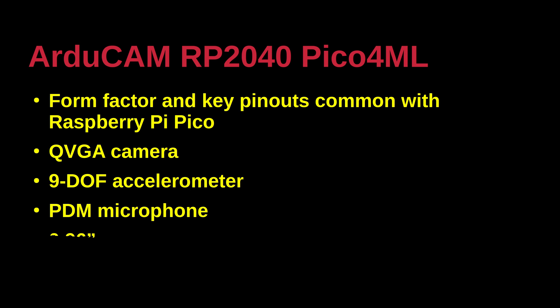The ArduCam RP2040 Pico ML board shares the same form factor and pin layout as the original Raspberry Pi Pico board. There is sufficient space on the board to accommodate the following extra components on one side: a low pixel camera, a 9 degrees of freedom inertial management unit, and microphone. On the other side, there is a monochrome display.